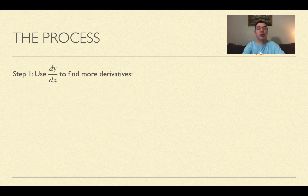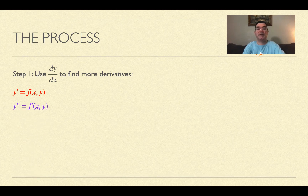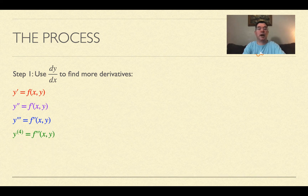So here's what we do. We use dy/dx and find more derivatives using our derivative rules. So y prime we already know is a function of x and y. The second derivative will be f prime of x and y, and the third derivative will be the second derivative of f, and so on. The fourth derivative of y will be the third derivative of f. We just keep applying derivative rules, knowing that the nth derivative of y is going to be the (n minus one)th derivative of that function f written in terms of x and y.